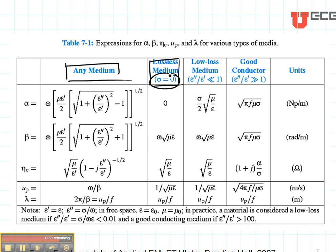The other column that we will commonly use is for lossless media, when the conductivity is equal to zero. There are two other columns that are used for approximations, but we won't be using them in general.